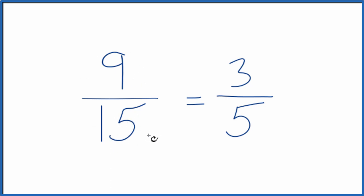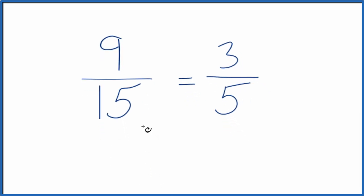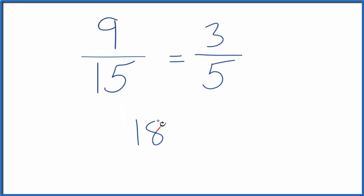Instead of dividing, we could multiply. So let's multiply the numerator and denominator by 2. 9 times 2 is 18. 15 times 2 is 30. So that's an equivalent fraction for 9/15.